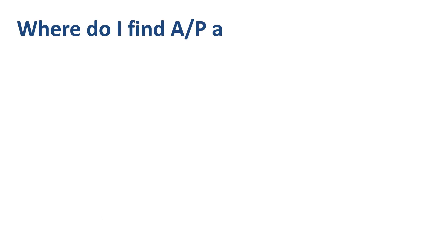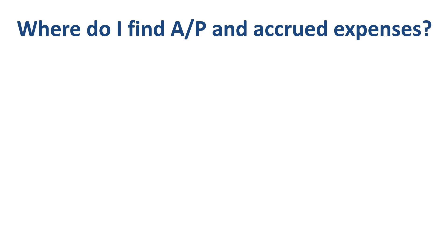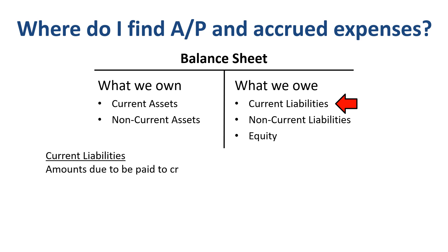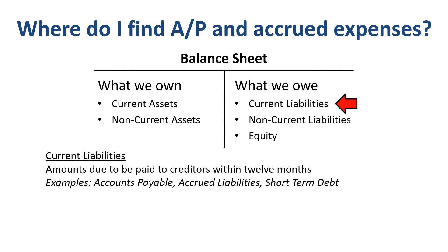Where do you find accounts payable and accrued expenses in the financial statements? Both are found on the balance sheet, more specifically in the current liabilities section on the right. Current liabilities are amounts due to be paid to creditors within 12 months.